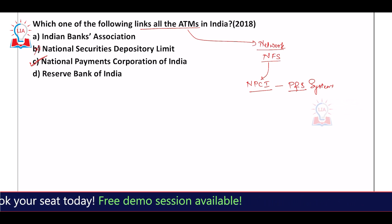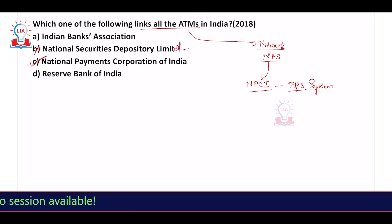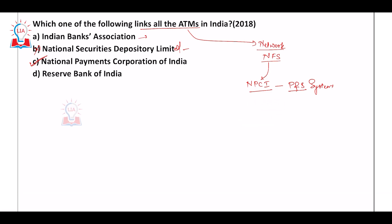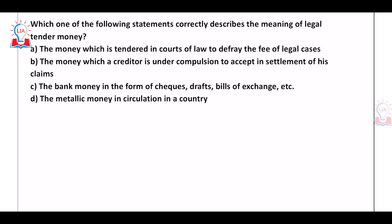You can directly eliminate the National Securities Depository Limited (NSDL), the Indian Banks' Association — which is just a group of banks forming an association — and the Reserve Bank of India, which is not related to running the ATM network. So the answer is option C.